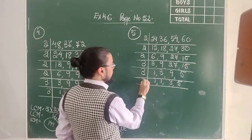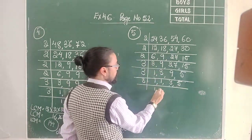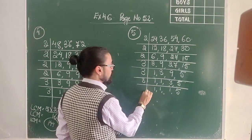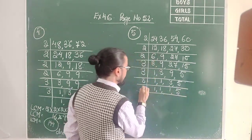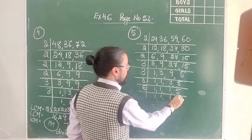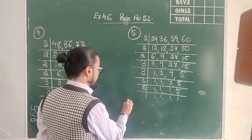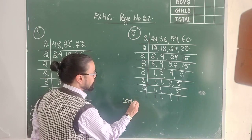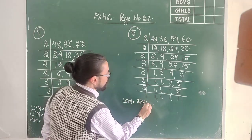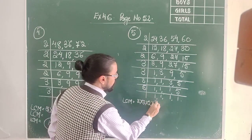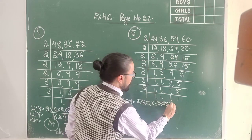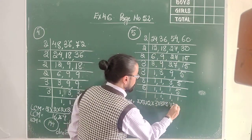3 is still divisible by 3: 1 copied down, 1. 5 is not divisible by 3 — it's a prime number, it comes down. So I get 1, 1, 1, 1, 1. My LCM here will be 2 × 2 × 2 three times, 3 × 3 × 3 three times, and 5 only once.